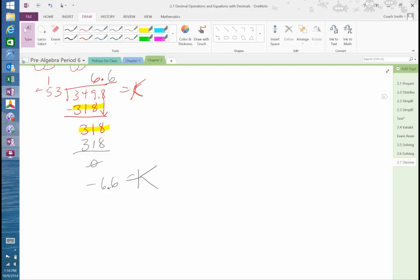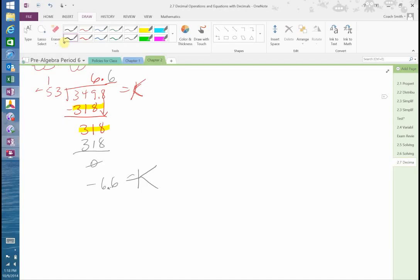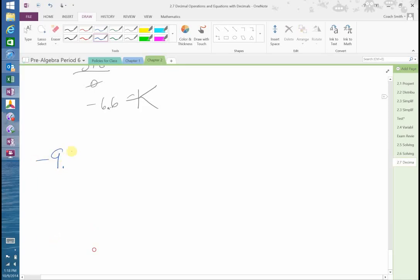All right. Now, let's look at one that has multiplication to solve. Negative 9.1 equals S over negative 7.12. Okay? So, here, we're dividing 7.12 into S. Okay? So, to solve this, to solve, we must multiply both sides by negative 7.12.